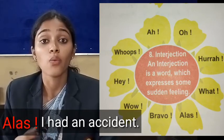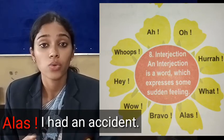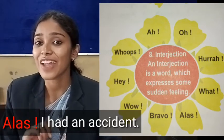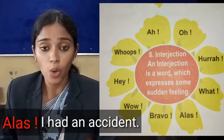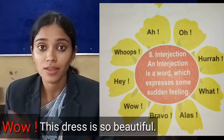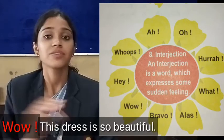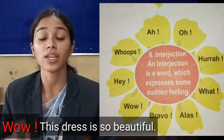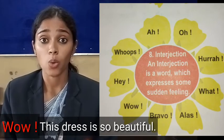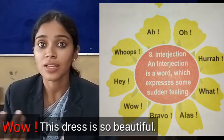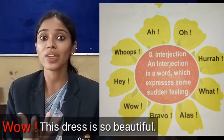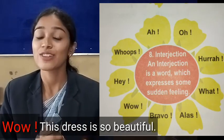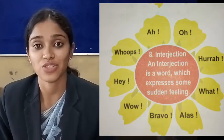One more example — we can say 'wow.' When someone is amazed about something: wow, this dress is so beautiful. This is a simple sentence, but when you say wow, this dress is so beautiful, that's showing that you are so amazed after looking at that beautiful dress. So that is the work of interjections.